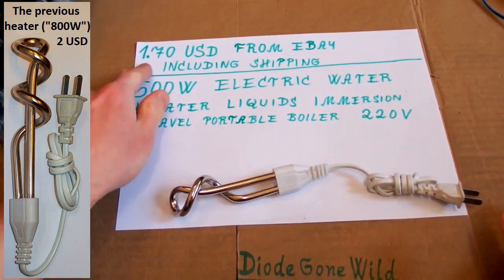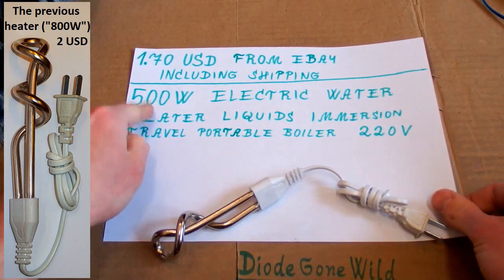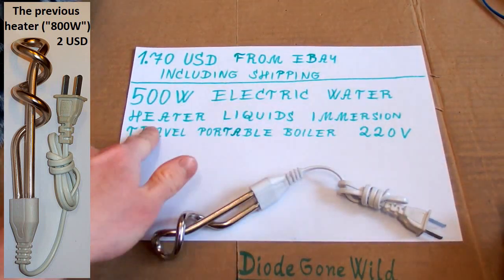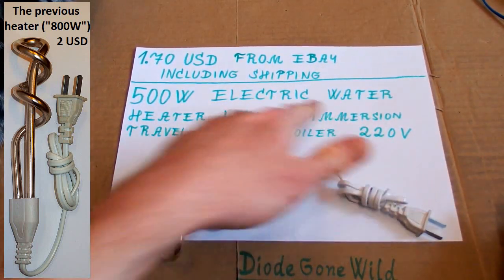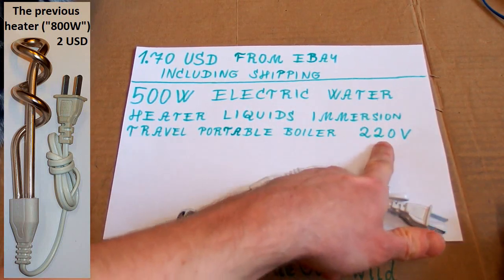It's from eBay for $1.70 including shipping and the listing says 500 watts electric water heater liquids immersion travel portable boiler 220 volts.